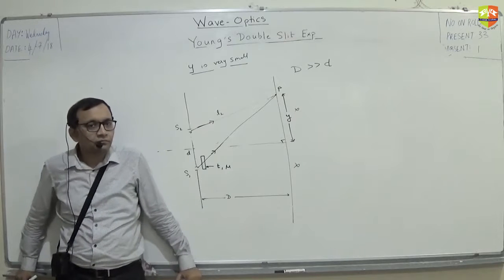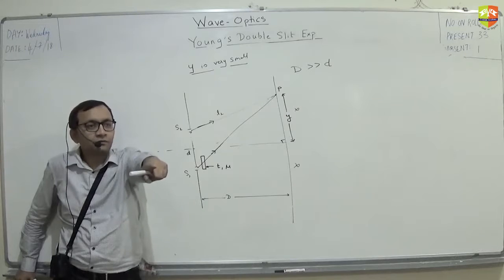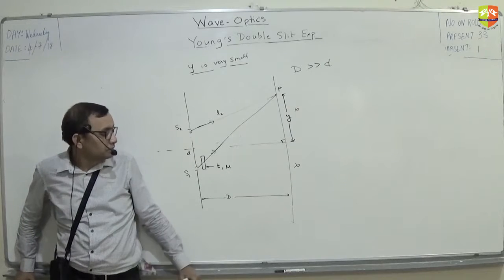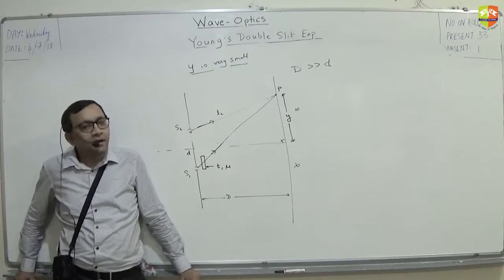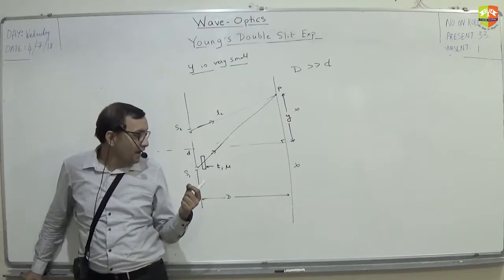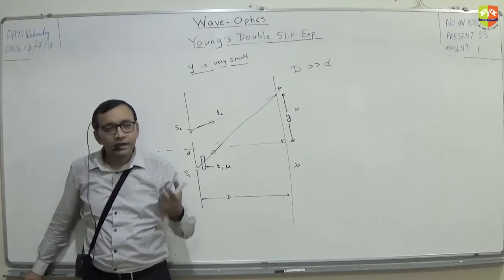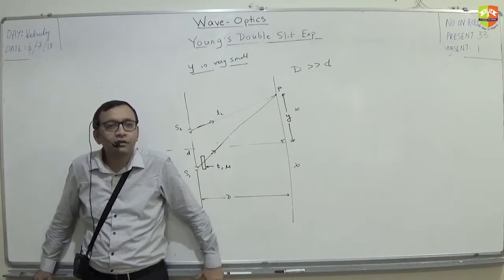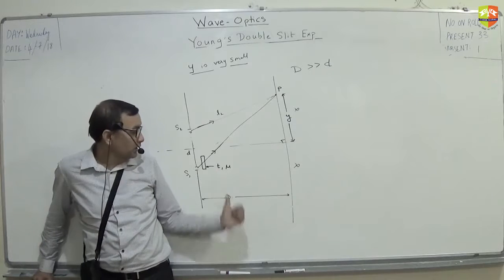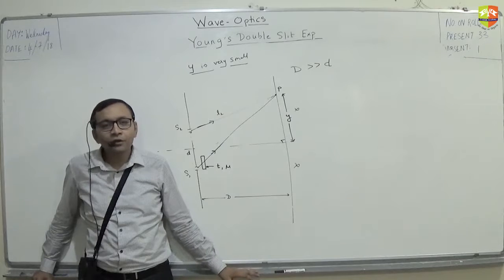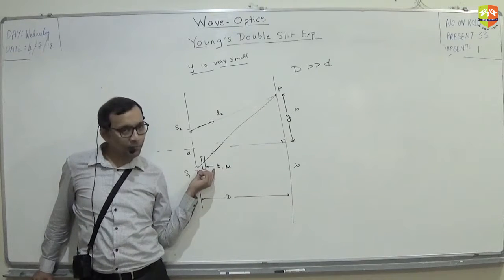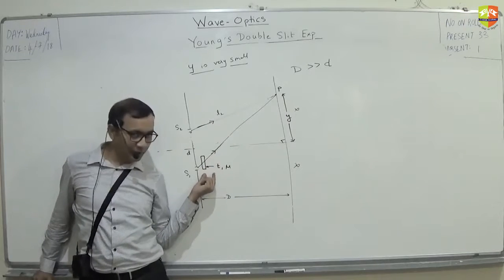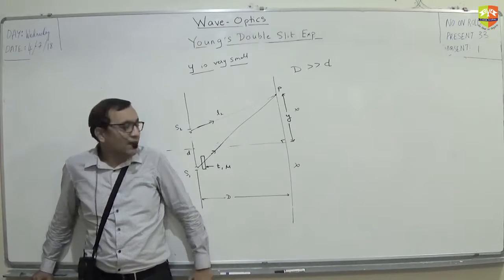The glass slab slows light down, so light from S1 travels a longer optical path. The optical path length seems to increase by mu minus 1 into t. So S1 is already traveling more optical path. For path difference to be zero, S2 has to travel more actual path as well. And that will happen only below — so the central fringe shifts downward.